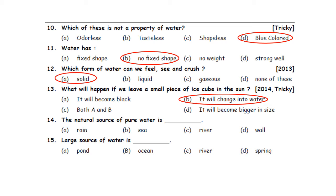Question fourteen: The natural source of pure water is dash. A. Rain. B. Sea. C. River. D. Well. The natural source of pure water is rain. So option A is the correct answer.